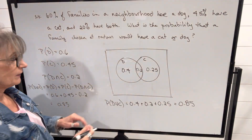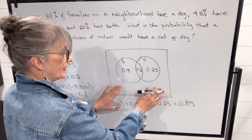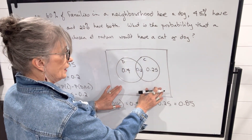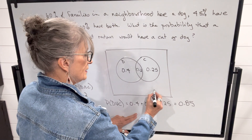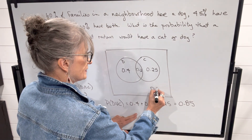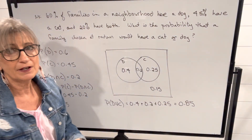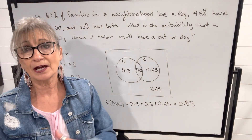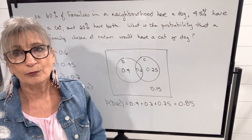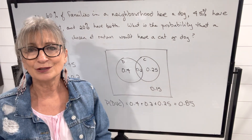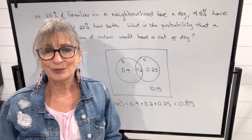If we want to know what the area outside the circles represents — people who don't have a cat or a dog — we take that total and subtract it from one. So the probability of a family chosen at random not having a cat or a dog would be 1 minus 0.85, which is 0.15, or 15%. Let's do one last example.